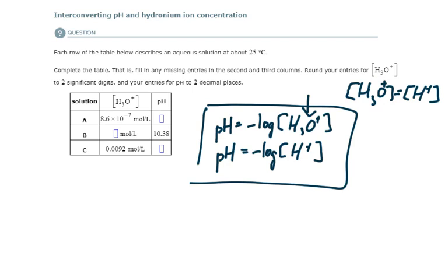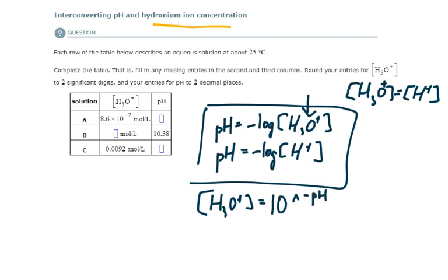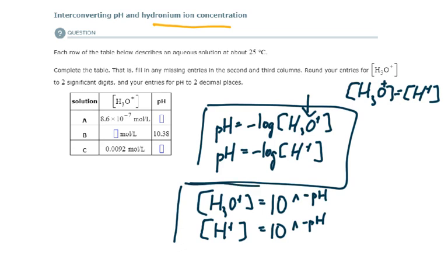If we are given the pH and asked to calculate the hydronium ion concentration, we use the formula: the hydronium ion concentration equals the antilog of the pH, or 10 to the negative pH. Again, H3O+ can also be represented as H+, and they are used interchangeably. Let's use these two equations to tackle the example problem.